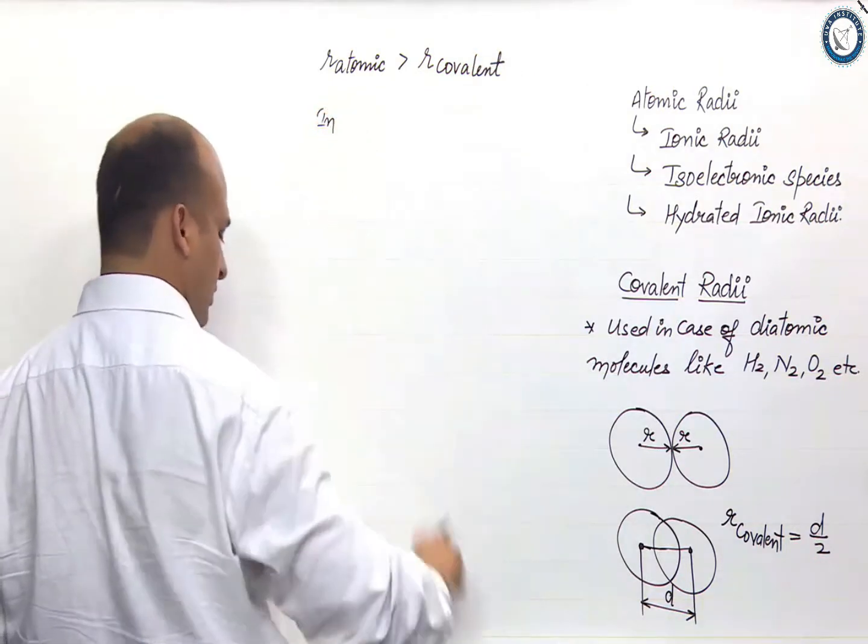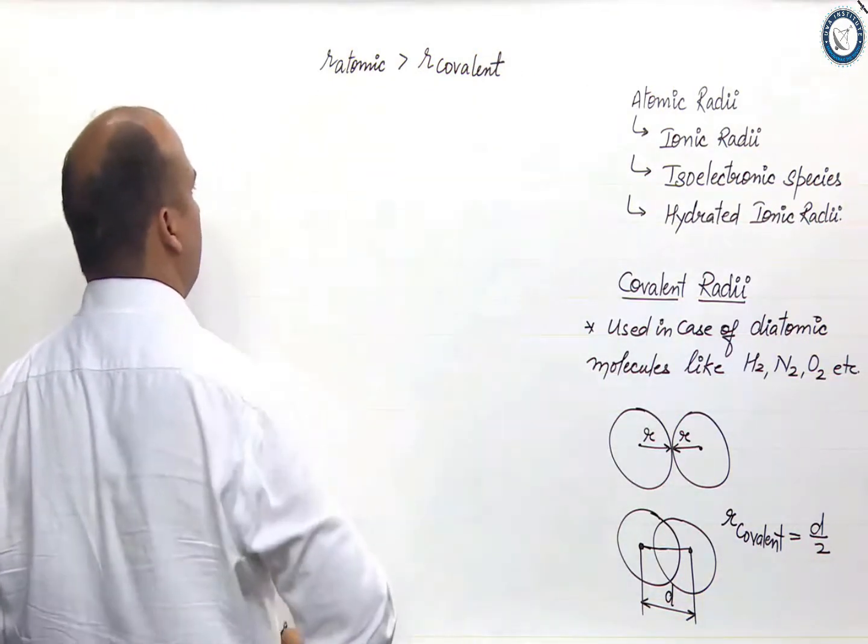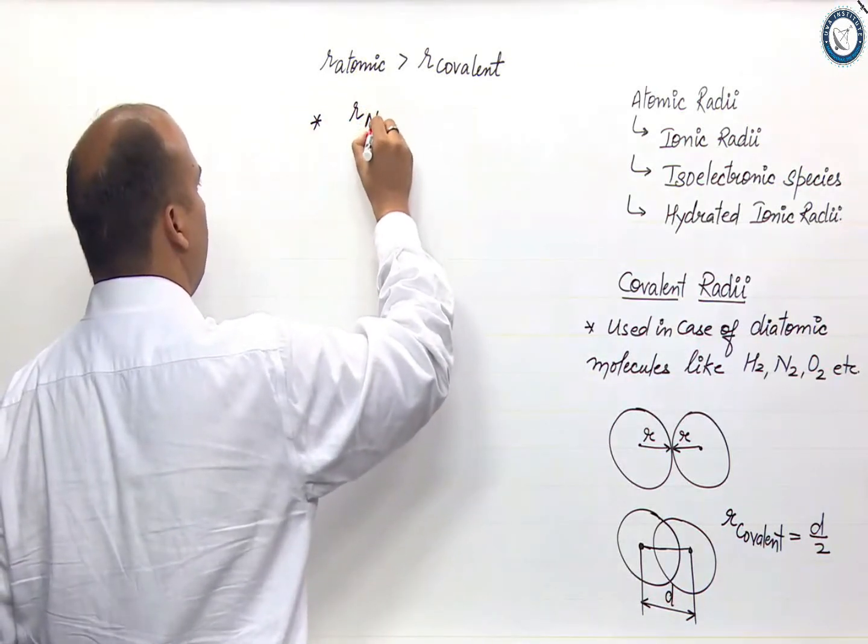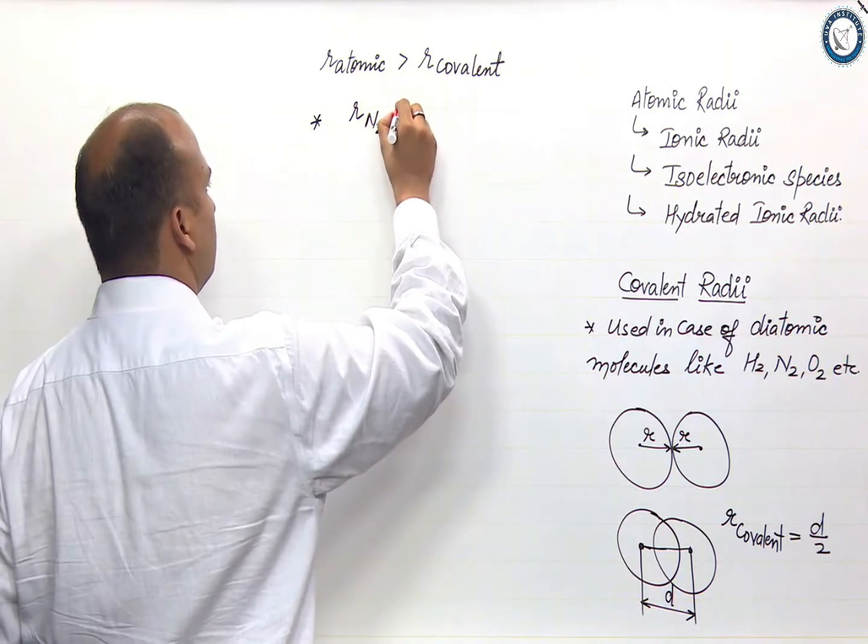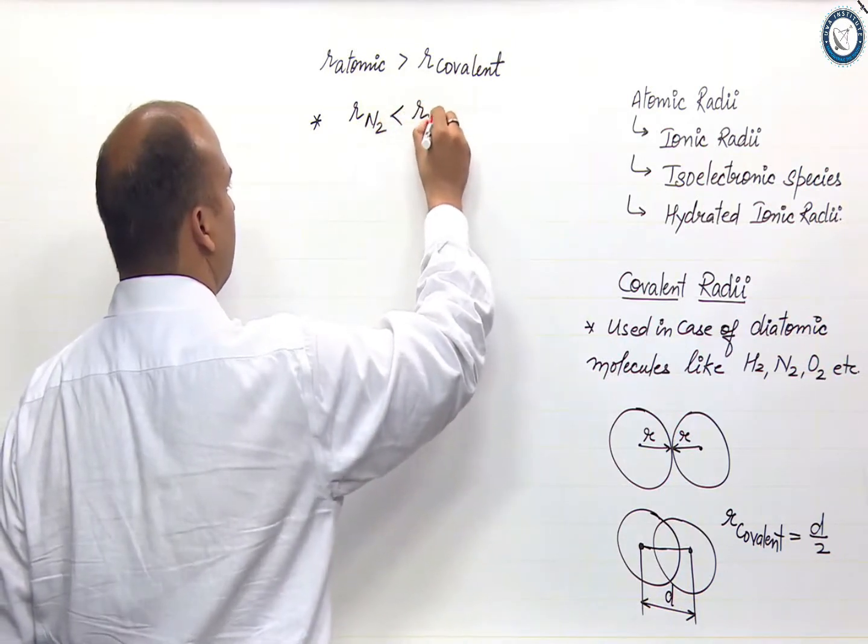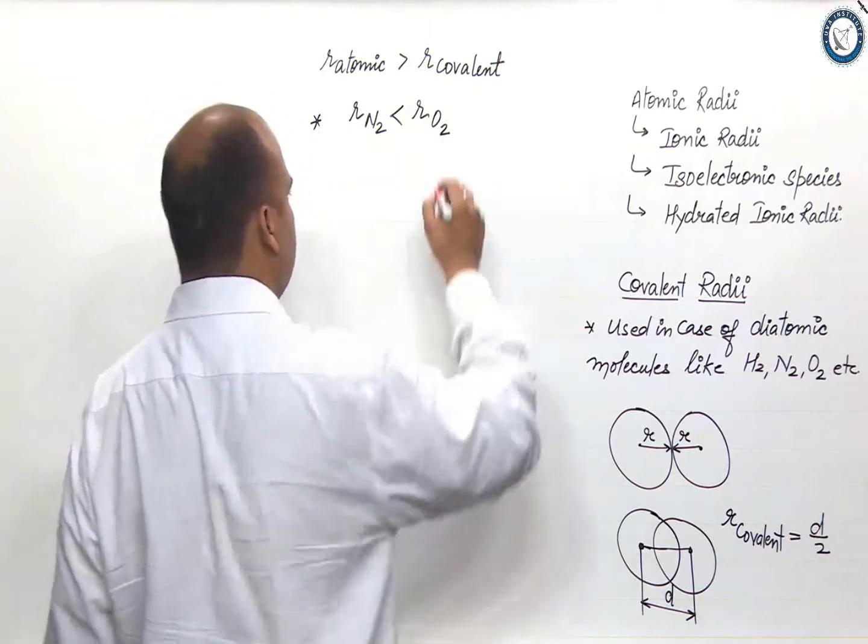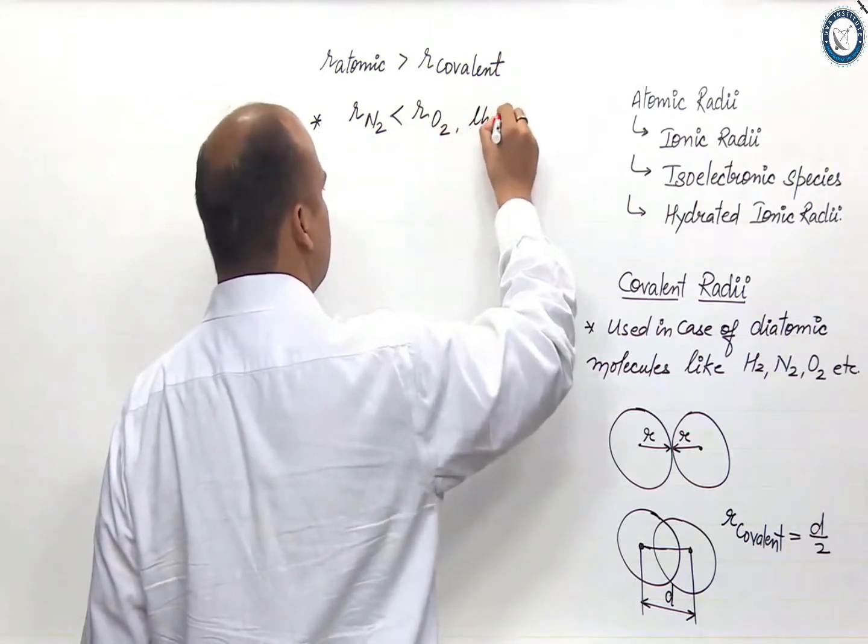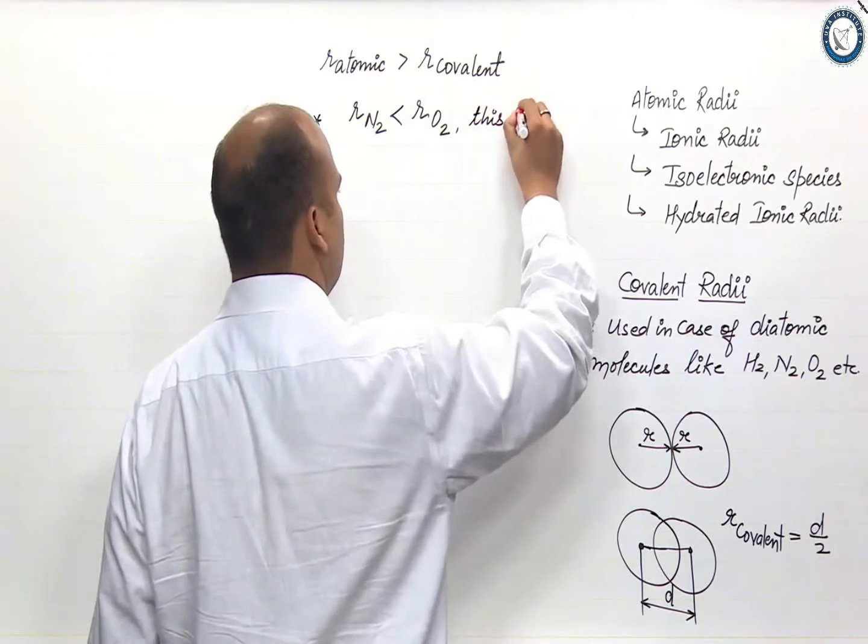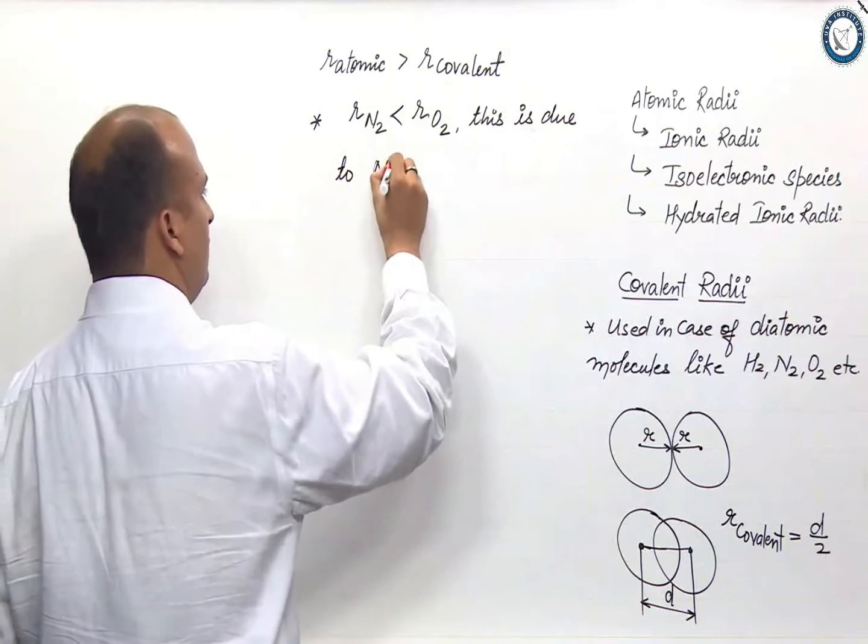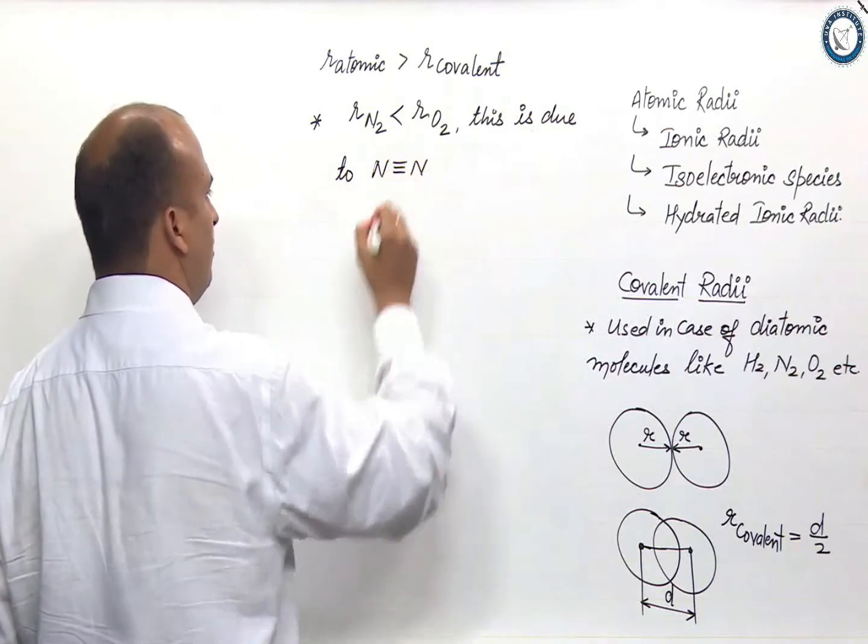In case, over here one important point: radius of nitrogen is smaller than the radius of oxygen. And why is it so? This is due to nitrogen-nitrogen triple bond.